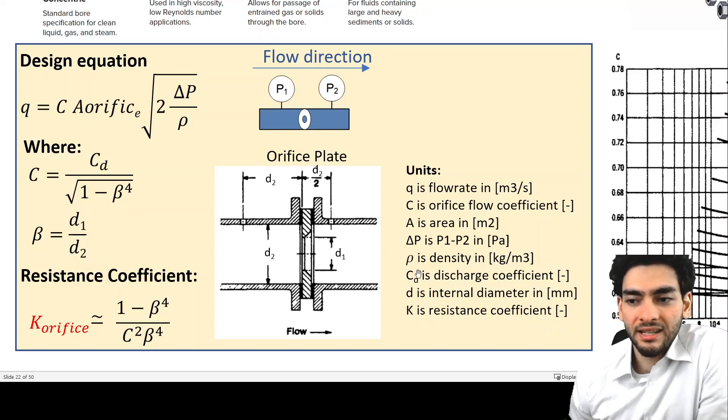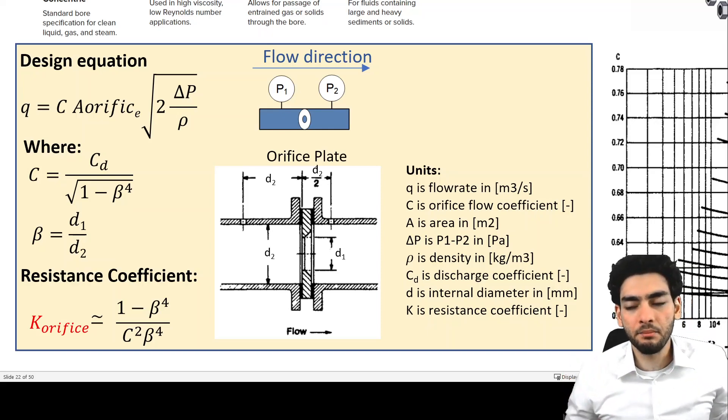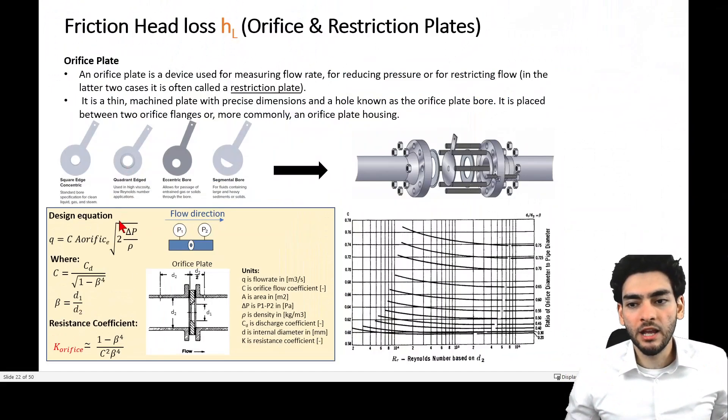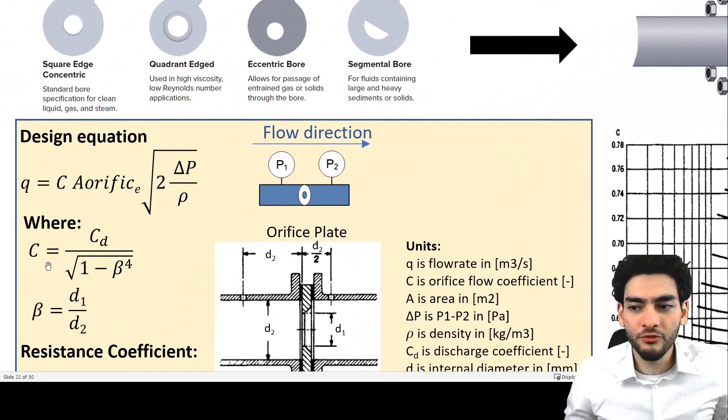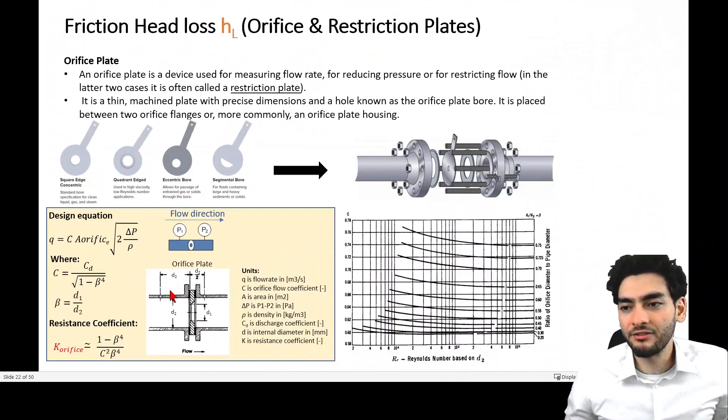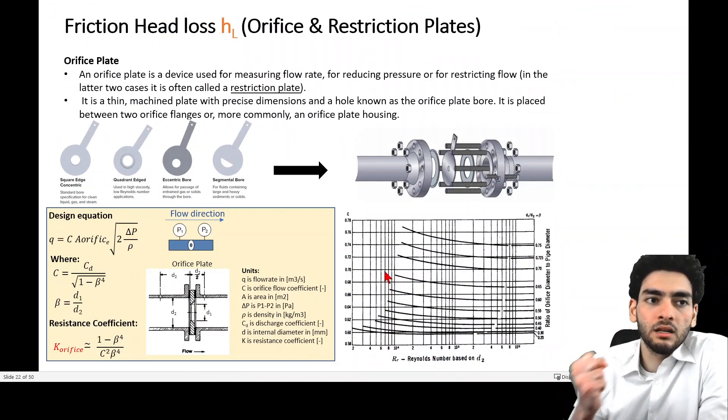This is a number that's determined experimentally, and that's why in order to evaluate the orifice flow coefficient, you're going to have to refer to charts based on experimental values and published data. You can see the chart over here on the right-hand side.